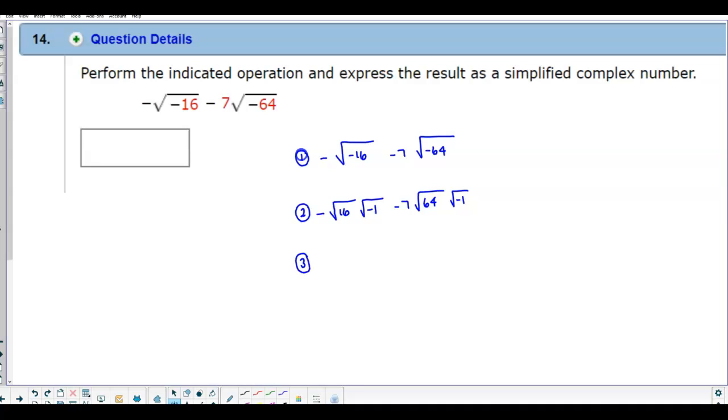Now, what about the square root of negative 16? Well, the answer is going to be 4. And we know that the square root of negative 1 is the same thing as i. Minus 7 times, what's the square root of 64? Well, that's 8 times i.